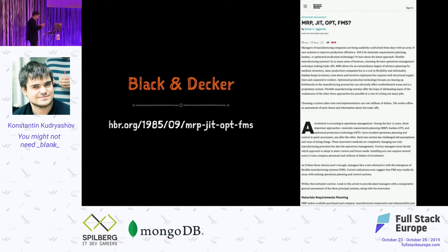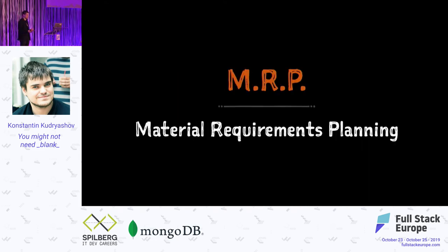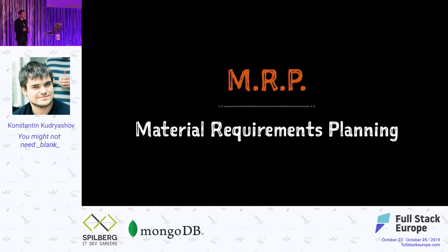Black & Decker went from one of the many to being the market leader. They used practices like just-in-time and Kanban, but at the center of the entire transition was one technology called MRP, or Material Requirements Planning. I wasn't even born at that time so I had to research what it was. MRPs were precursors to ERPs — Material Requirements Planning is software for manufacturing that focuses on a much smaller-scale problem.